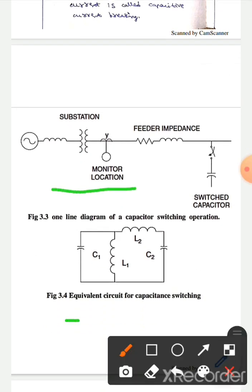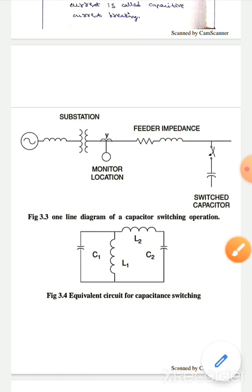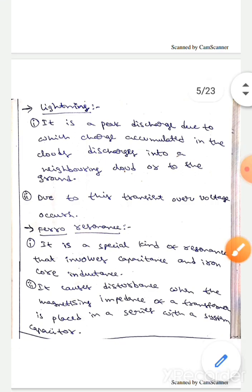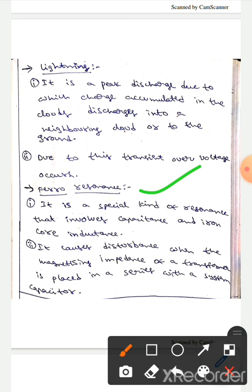This is the equivalent circuit for capacitance switching. The next source is lightning. It is a peak discharge due to which charge accumulated in the cloud discharges to another cloud or to the ground. Due to this, transient over voltage occurs.